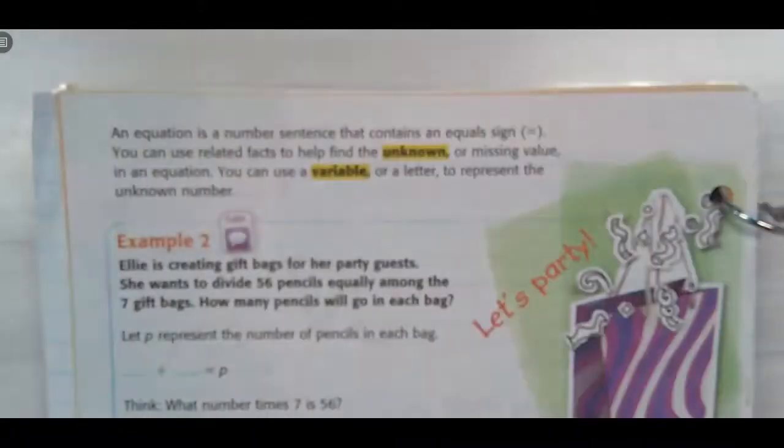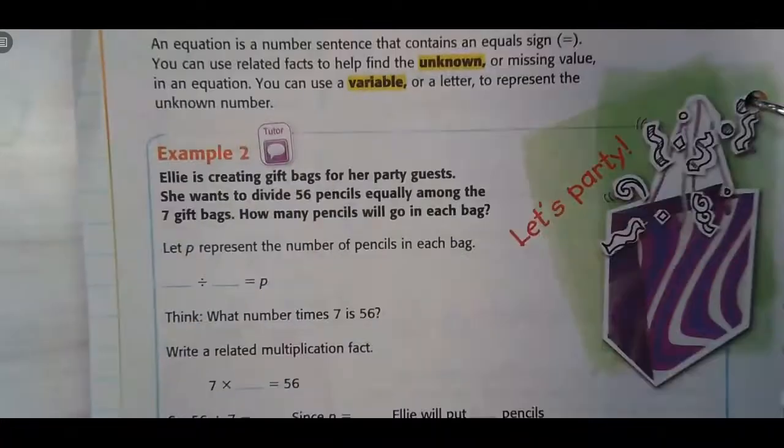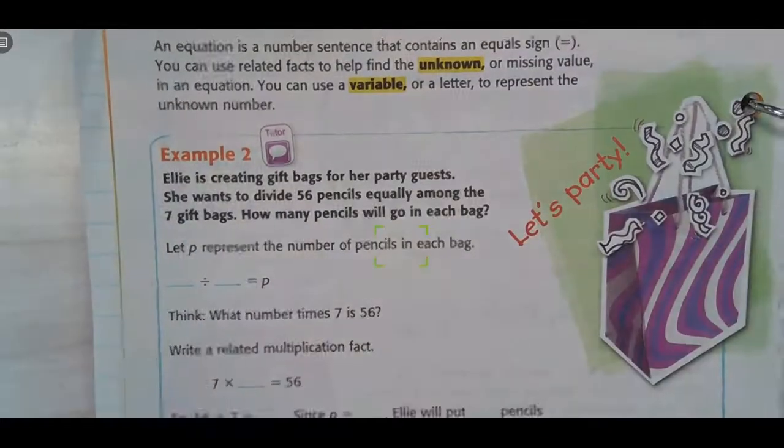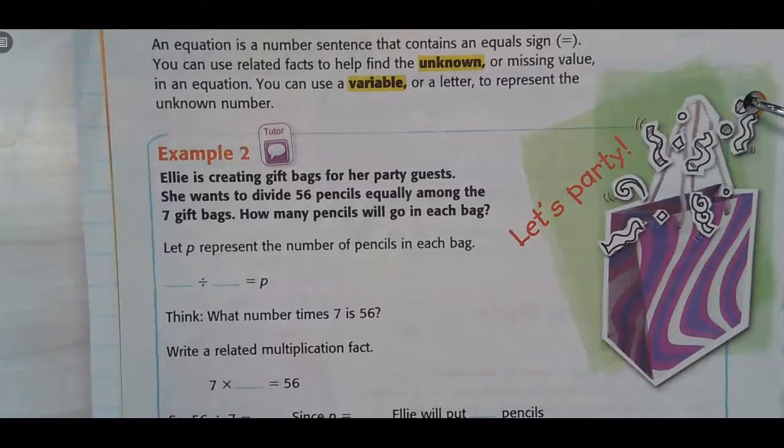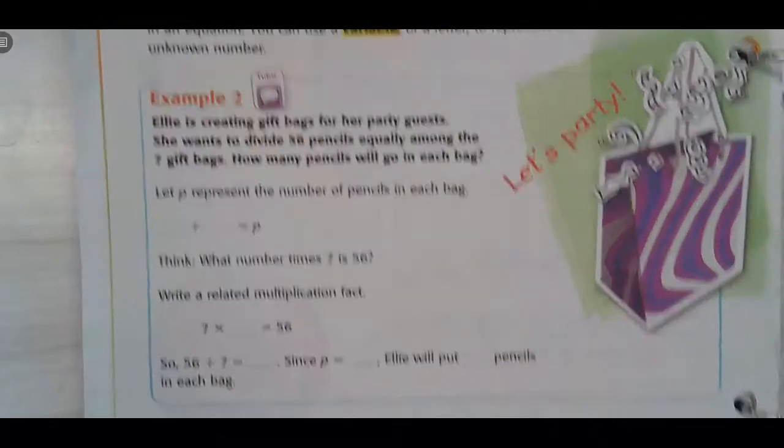Oh, this is getting into algebra. I love algebra. An equation is a number sentence that contains an equals sign. Well, that makes sense, right? Because you guys have seen equations before. They have an equals sign on them. You can use related facts to help you find the unknown or the missing value in an equation. You can use a variable or a letter to represent the unknown number.